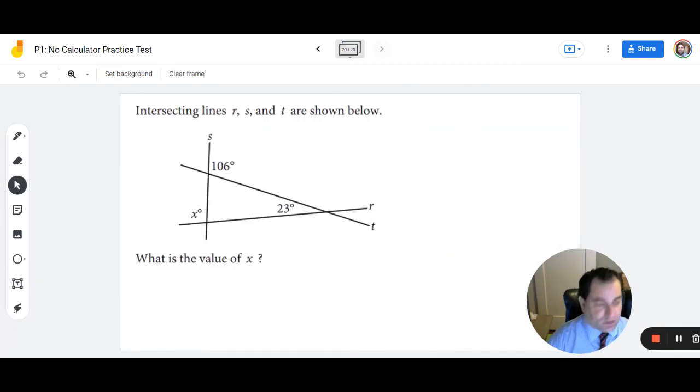Last question here. We have intersecting lines. R, S, and T are shown below. What is the value of x? So a couple things. We know we can find this is a linear pair, 106, and this angle right here. So working that out, we can do 180 minus 106. Well, 180 minus 100 is 80. 80 minus 6 is 74. Next, what I can find is we can find this angle right here, which is a linear pair with the angle we need.